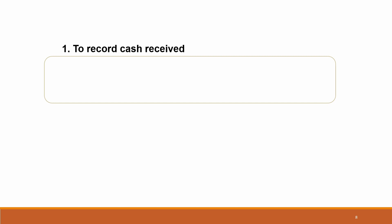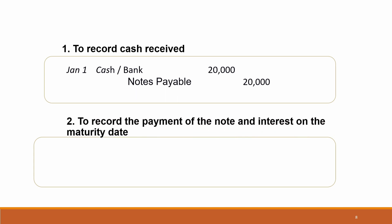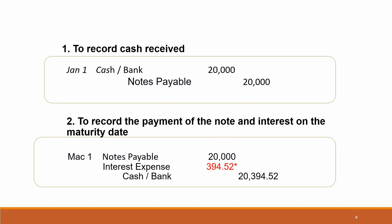For journal entry number one, record cash receipt on 1st January: Debit Cash RM20,000, Credit Notes Payable RM20,000. For journal entry number two, to record the payment of the notes and interest on the maturity date, 1st March: Debit Notes Payable RM20,000, Debit Interest Expense RM394.52, and Credit Cash or Bank RM20,394.52.